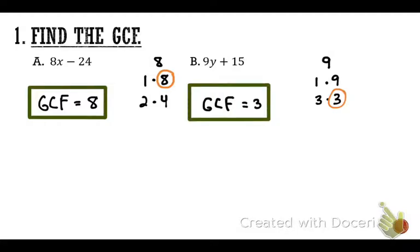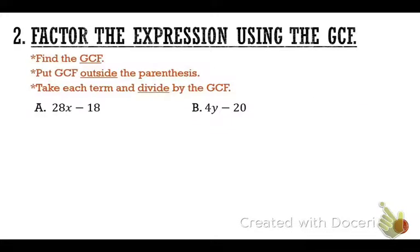Now the instructions ask us to factor the expression using the GCF. There are three steps: first, find the GCF; second, put the GCF outside the parentheses; and third, take each term and divide it by the GCF. Basically, what we're doing today is the opposite of the distributive property. The smallest number here is 18, so let's choose 18.